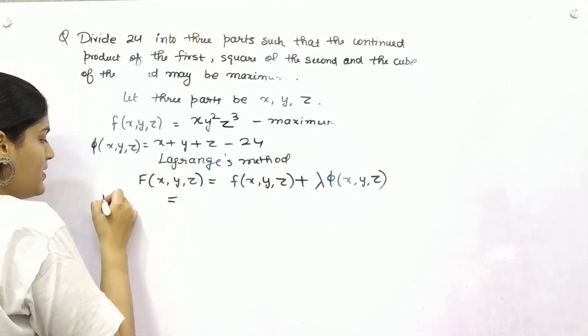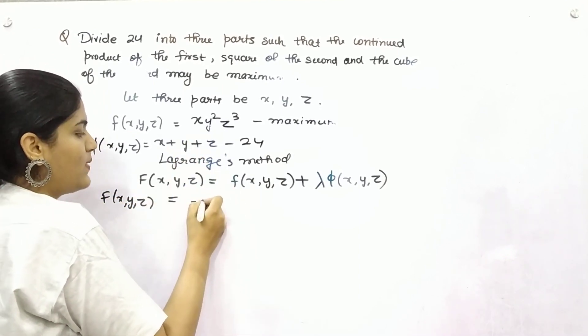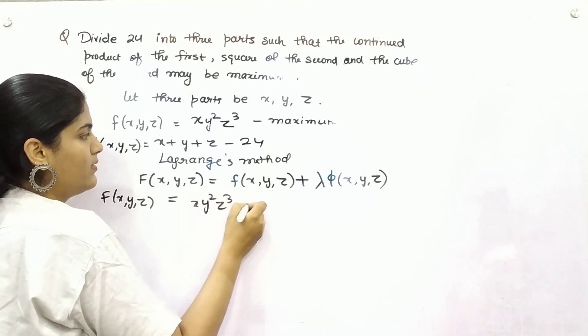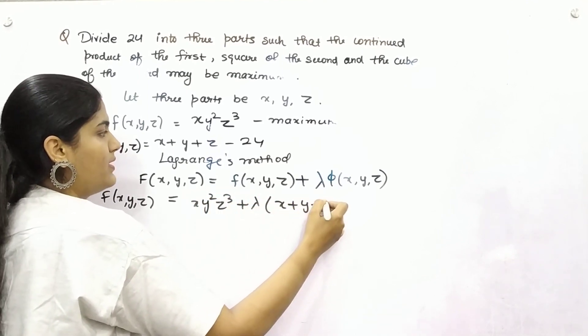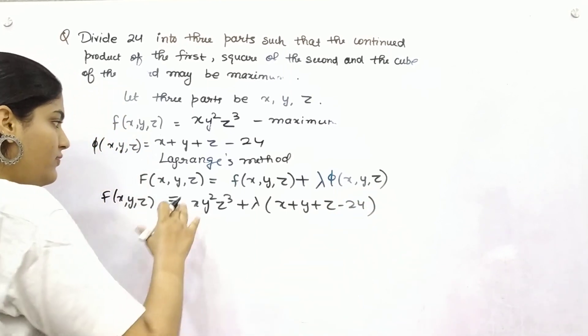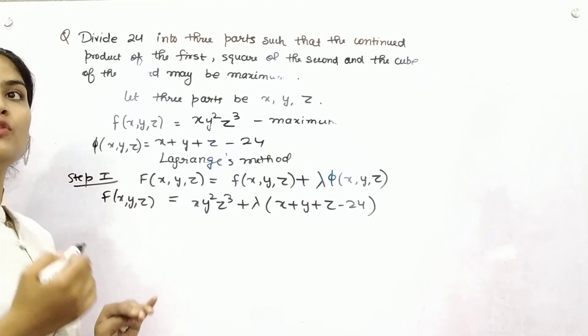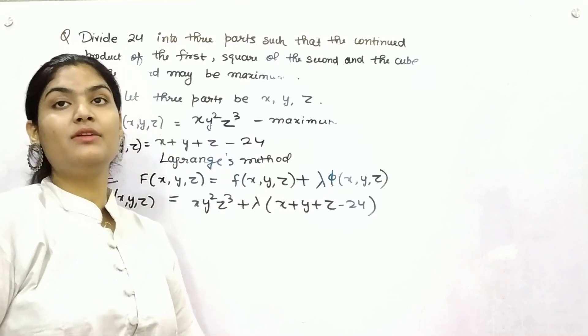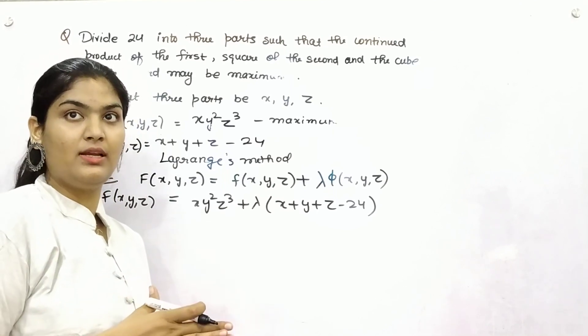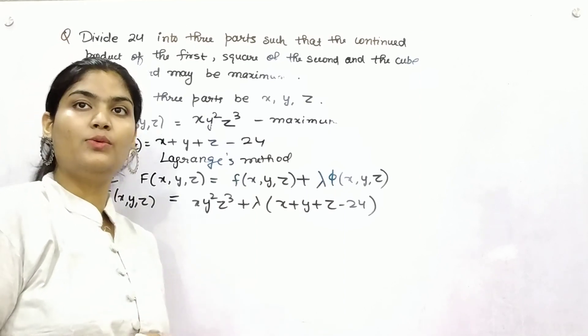Now from here we can analyze that this is x * y² * z³ and this is x plus y plus z minus 24. So this was your first step using this formula. Now your next step is you have to find out the partial differentiation of that particular function with respect to x, y, and z and equate them as 0.